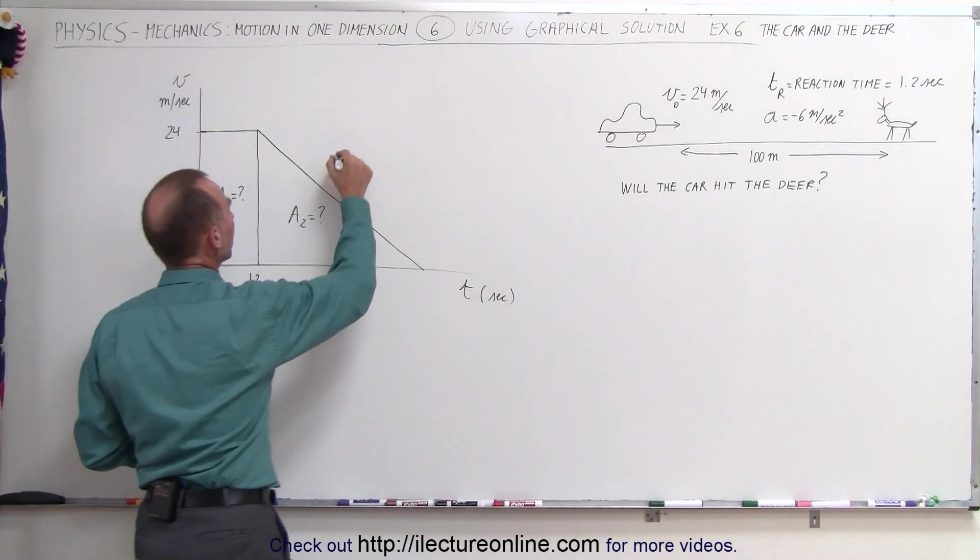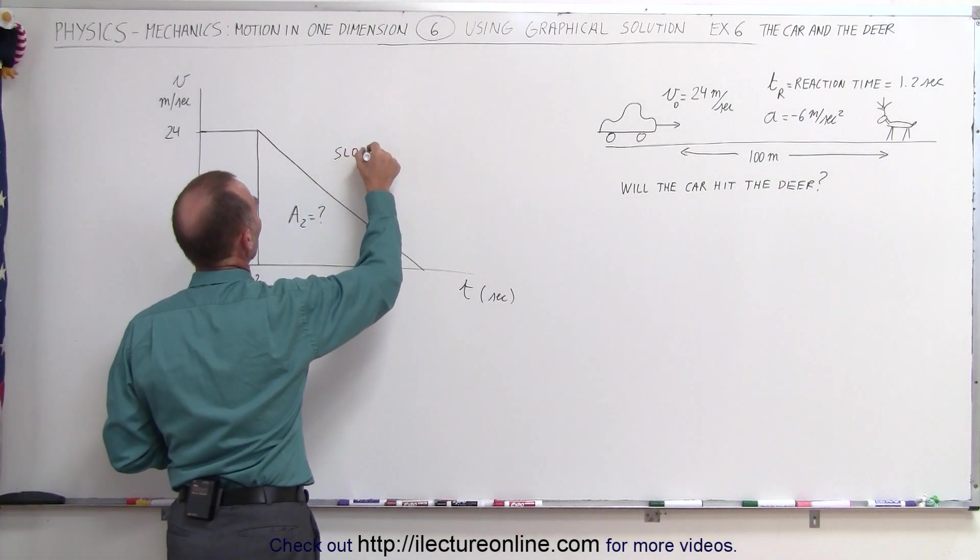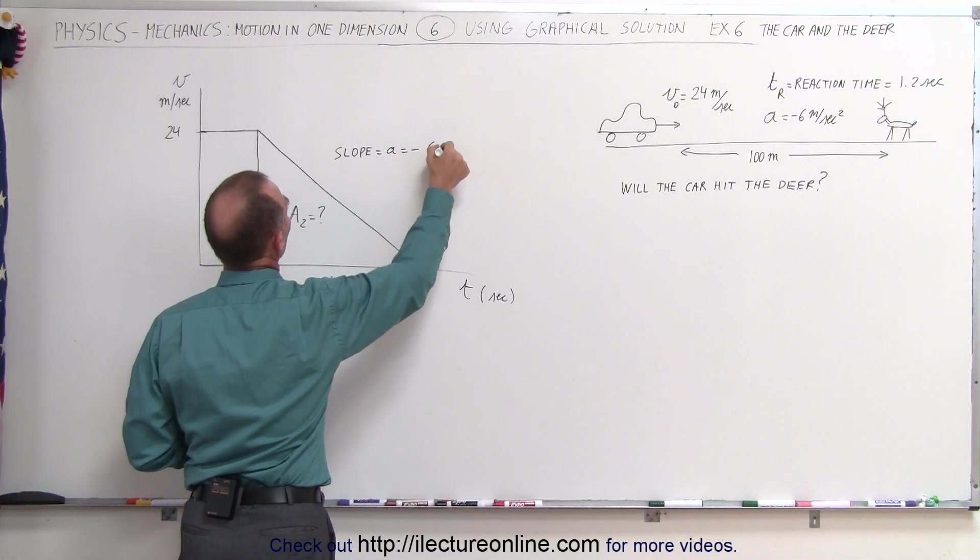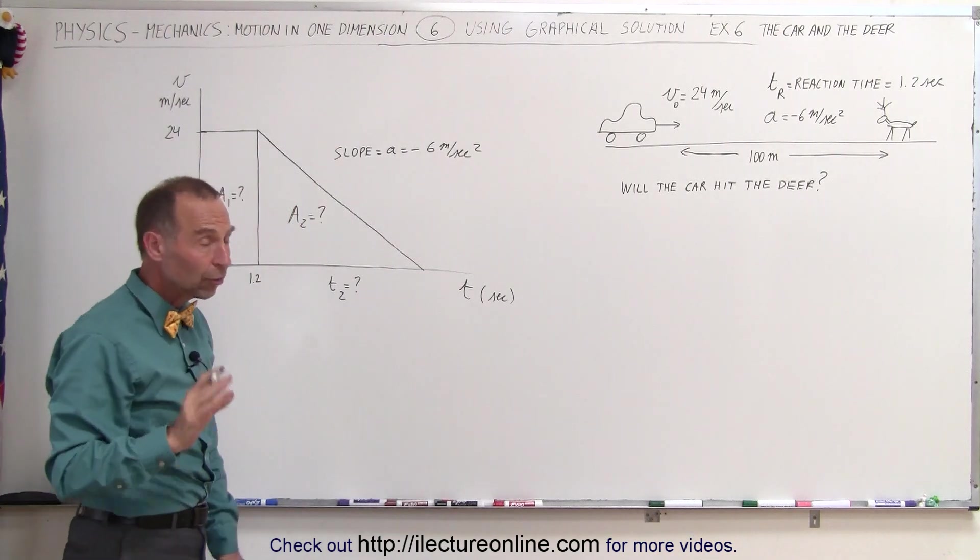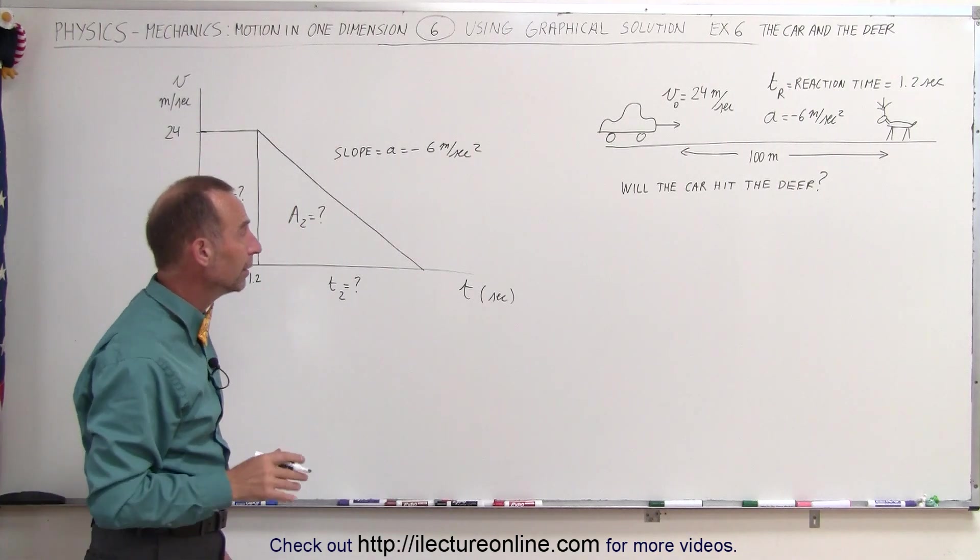We know that the slope here, which is equal to the acceleration, is equal to minus 6 meters per second squared. So we're going to find a1 and a2.